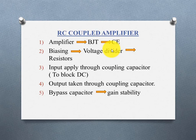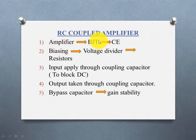First: RC Coupled Amplifier uses a BJT. Transistor is used as an amplifier. Transistor can be used as a switch or amplifier. The amplifier can be implemented using a BJT.